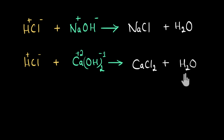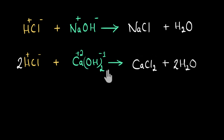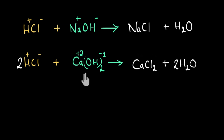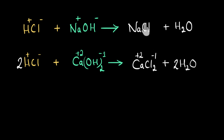Let me quickly balance this equation. I see two chlorine on the product side, so I write two HCl. Now I have four hydrogen, so I write two H₂O. I get four hydrogen, two oxygen, and one calcium — this is now a balanced chemical reaction. Here also, an acid reacts with a base to give salt and water, both neutral. Calcium chloride is a salt — salts are compounds made up of ions, and salts can be formed when acids and bases react.